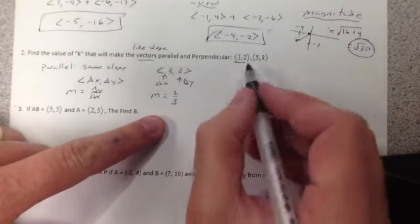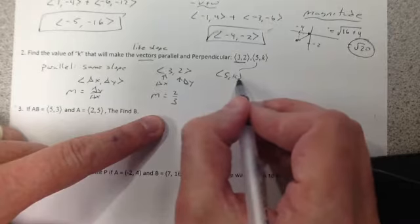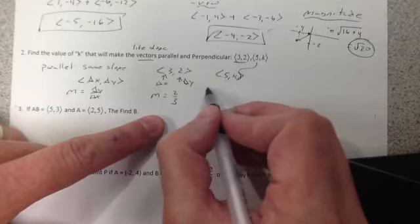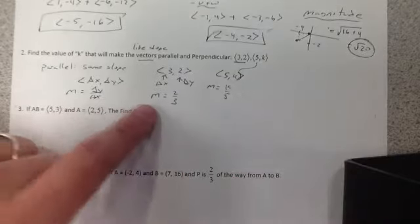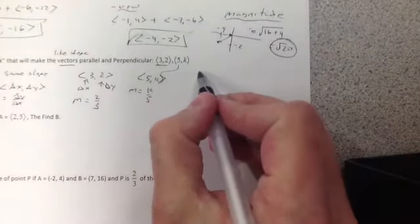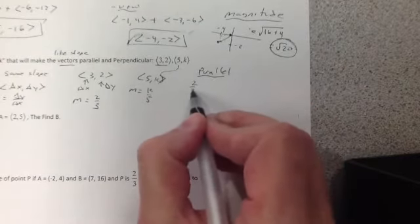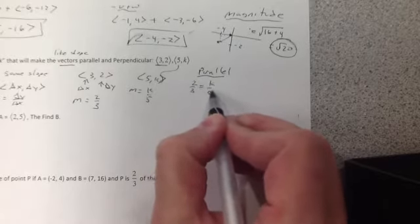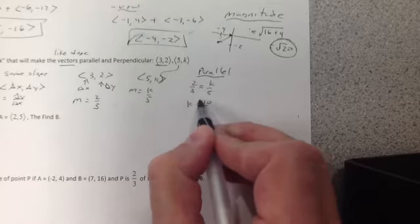I do the same thing for this one. Now, 5K as a slope, it becomes K over 5. Well, if they're parallel, what has to be true? So if they're parallel, they must equal. 2 over 3 equals K over 5. Cross multiply, you wind up with K equals 10 over 3.